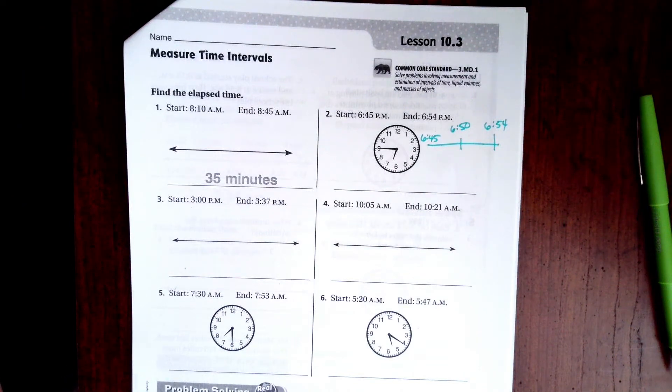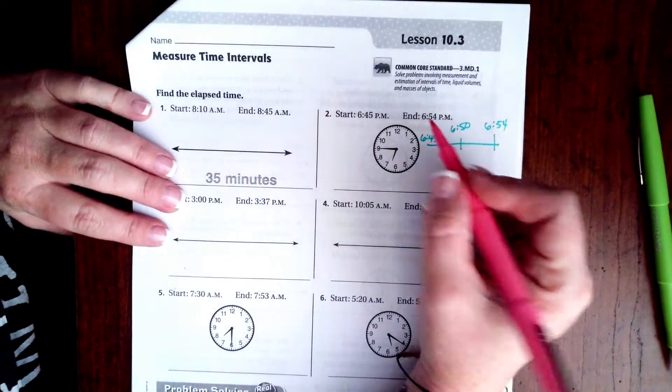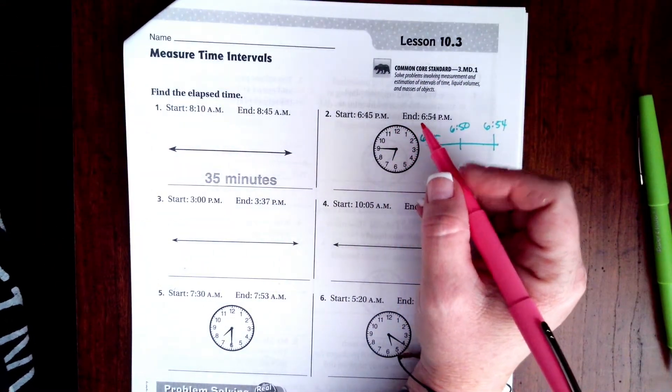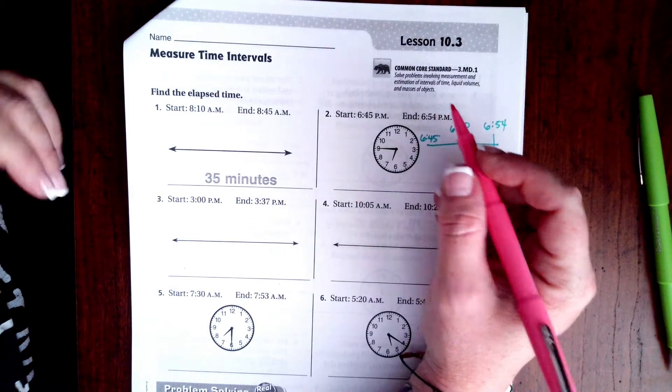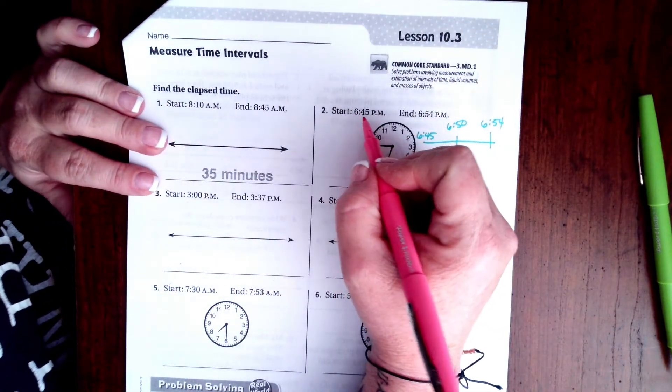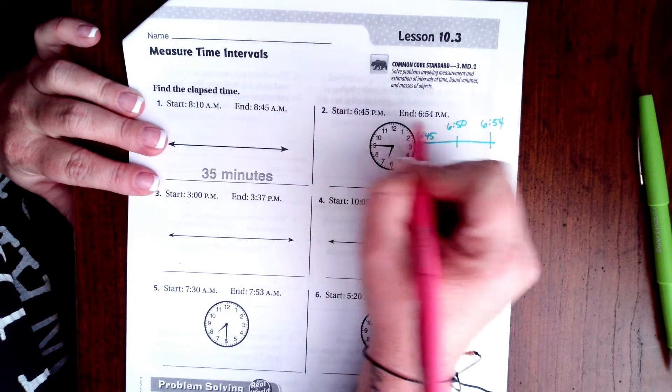Hi guys, welcome to third grade chapter 10 lesson 3. We're going to go ahead and get started with number two. All it wants to know is how much time has passed between the times that they're giving you. So we're going to start at 6:45 p.m.